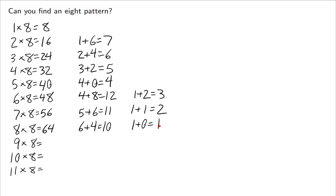8 times 8 is 64. Adding up the digits you end up with a 1 overall. But now the question is what are we going to get next? Are we going to get 0? It keeps dropping — but let's see. 9 times 8 is 72, and 7 plus 2 is 9. That's interesting. 10 times 8 is 80, and 8 plus 0 is 8. My speculation is that it just starts going down again — as soon as we got to 1, it looped back to 9.